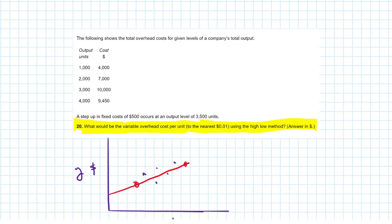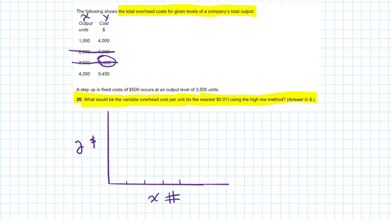We've got total overhead costs and some total output. So the total cost, that is the y-axis, and the output is the x. And I want the high and the low activity, so I'm going to eliminate these. Even though we have this outlier here that's the highest cost in the whole table, I'm going to go with the high and low units. We can now plot those on our graphs.